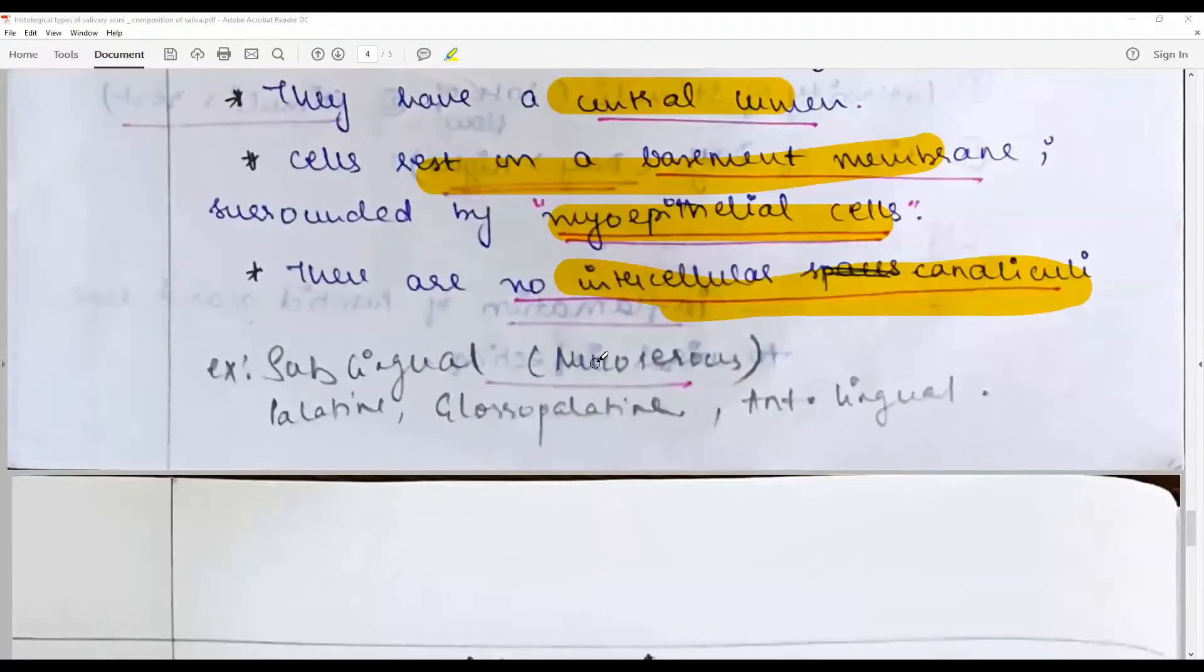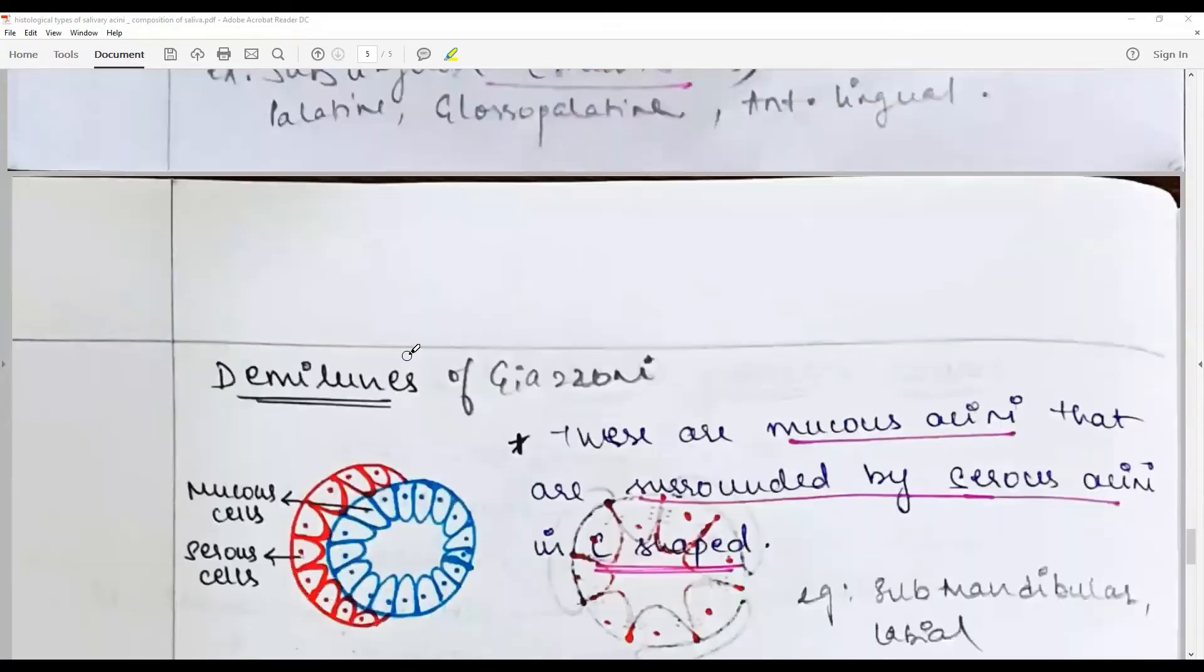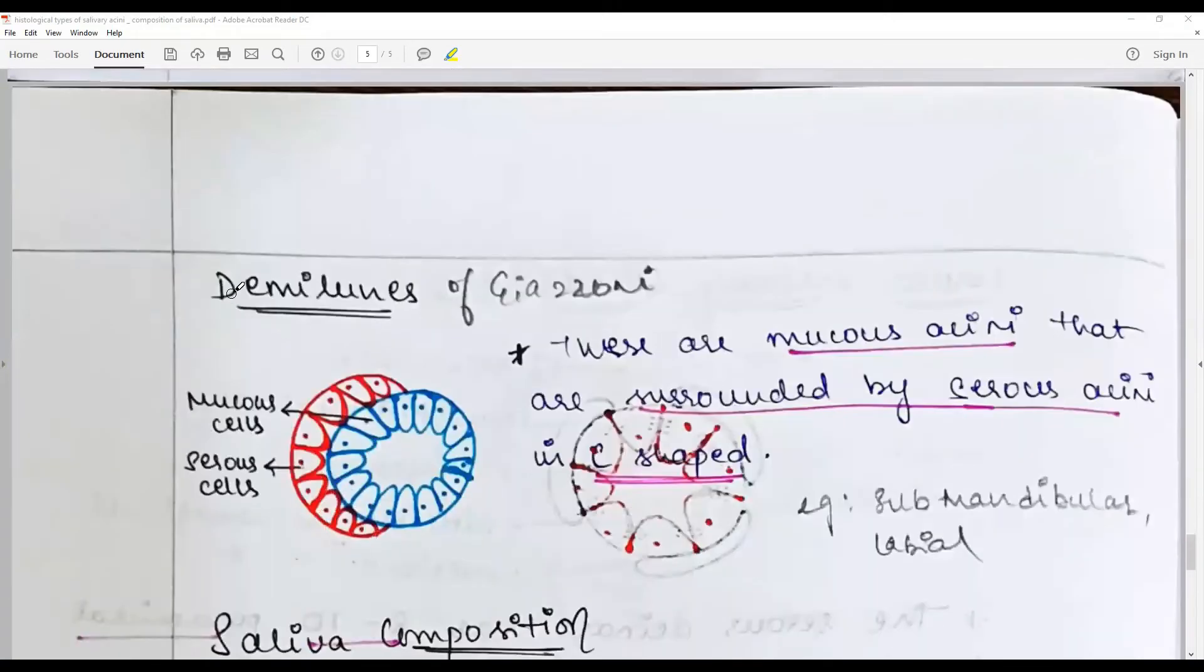Examples of the glands - now going into the important structures in the seromucous glands called the demilunes of Gianucci. In seromucous glands or mixed glands, you will find both entities, serous and mucous. The demilunes of Gianucci are mucous acini that are surrounded by a crescent-shaped serous acini in a C-shaped arrangement overlapping the cells.